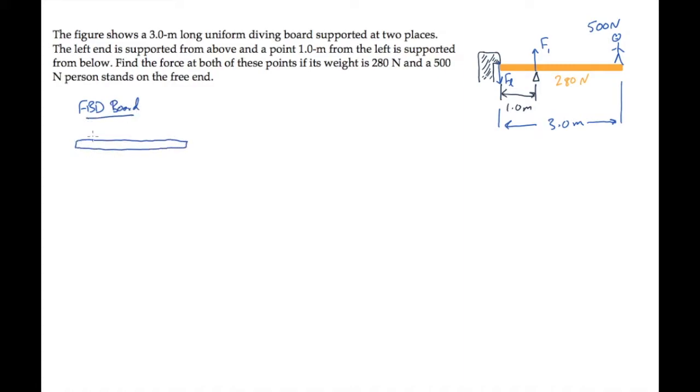We'll start by drawing a free body diagram of the board. Four forces act on the diving board. The downward force, FL, is shown here. The upward force, F1, acting a meter away from the left end. And then we're told that a 500 Newton person stands on the free end. So there's a downward weight force of the person. And the diving board itself has weight of 280 Newtons. That force acts at the diving board's center of mass, which is at its geometric center.